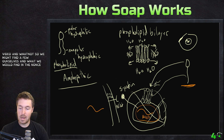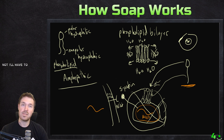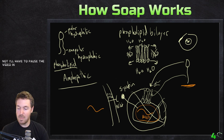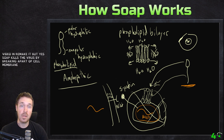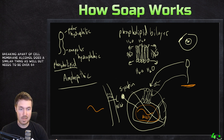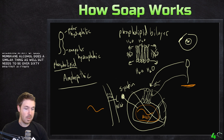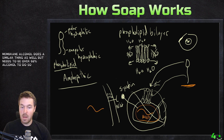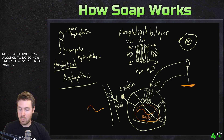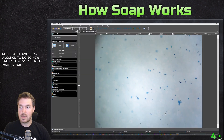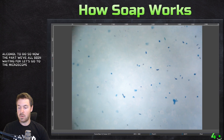So we might find fewer cells than what we would find in a non-soap sample. We'll see how it goes — hopefully we can still find a lot. If not, I'll have to pause the video and remake it. But yes, soap kills the virus by breaking apart the cell membrane. Alcohol does a similar thing as well, but needs to be over 60% alcohol to do so. Okay, now the part we've all been waiting for — let's go to the microscope.